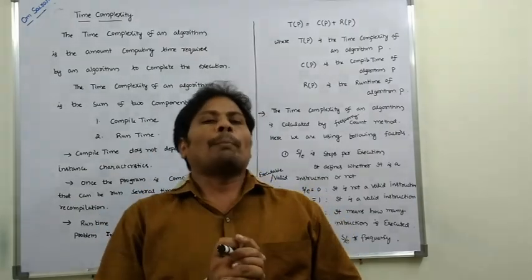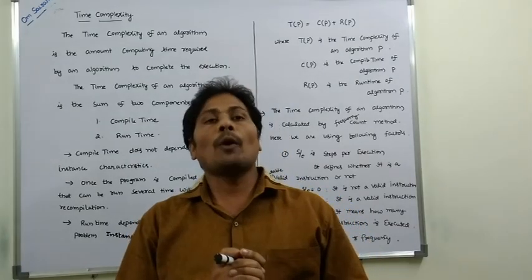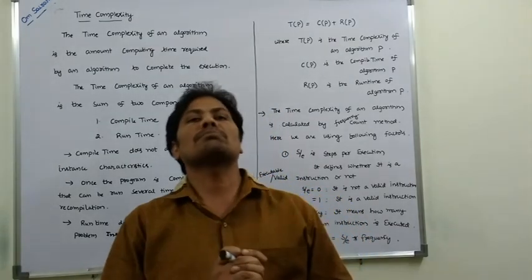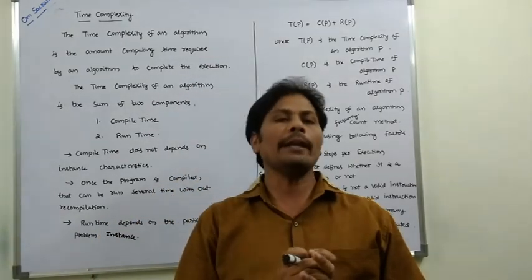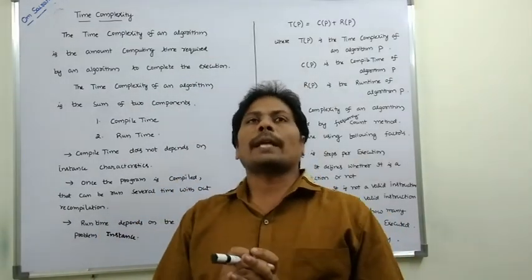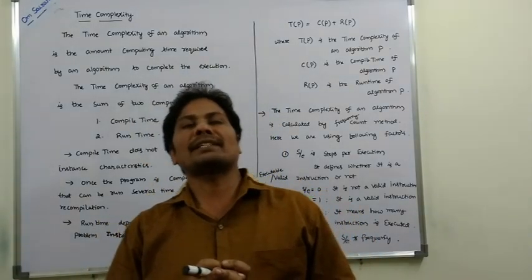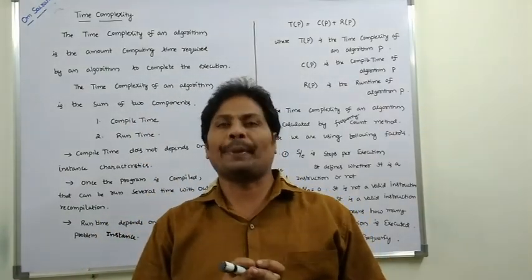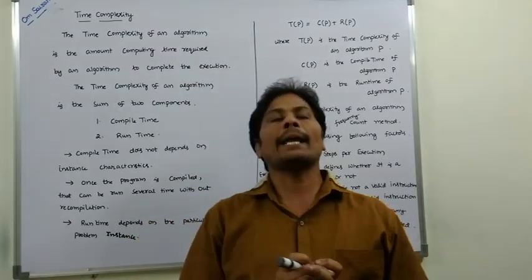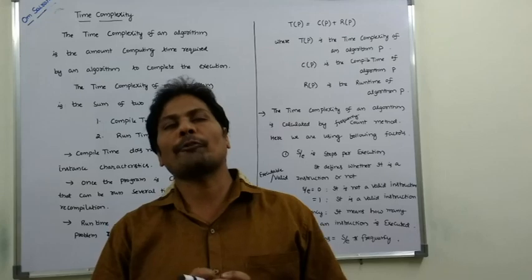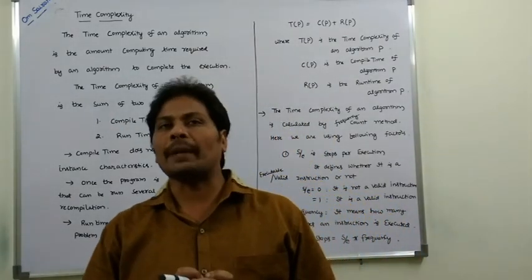The time complexity of an algorithm is the amount of computer time required to complete the execution of an algorithm. The time complexity of an algorithm P is represented by T(P), where T(P) is equal to compile time C(P) plus run time R(P).